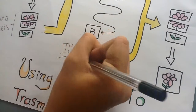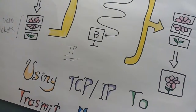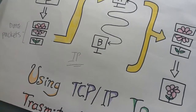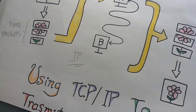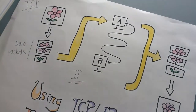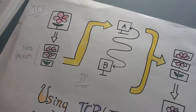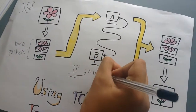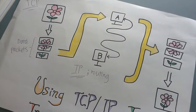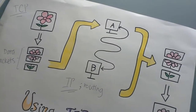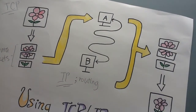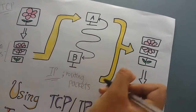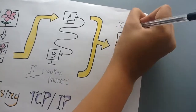IP, Internet Protocol, handles the actual delivery of data packages. IP is responsible for adding the destination IP address to every package for routing the package to the destination through the network. Also, IP selects the shortest path to the destination or chooses an alternative path to avoid network congestion.